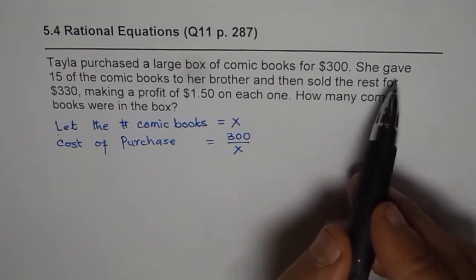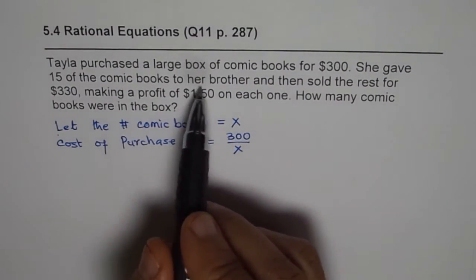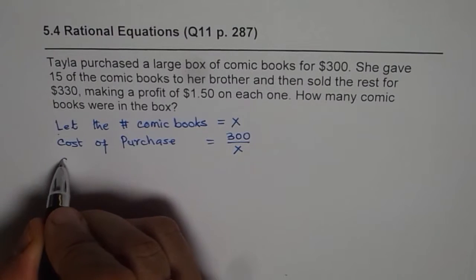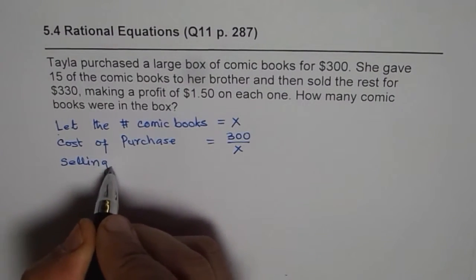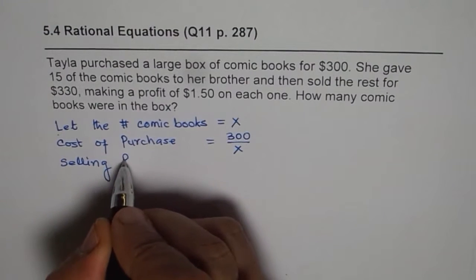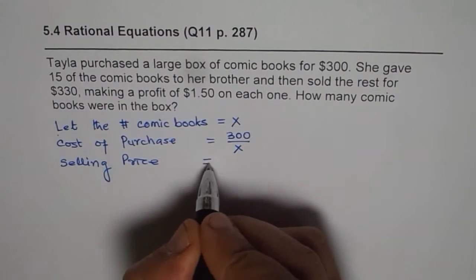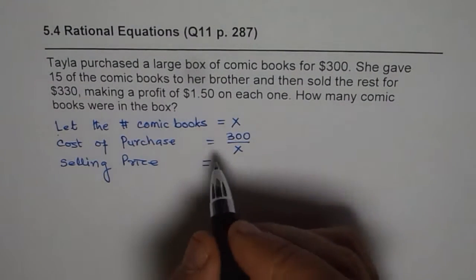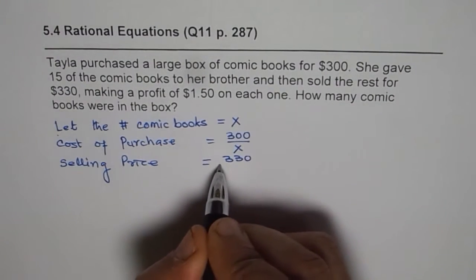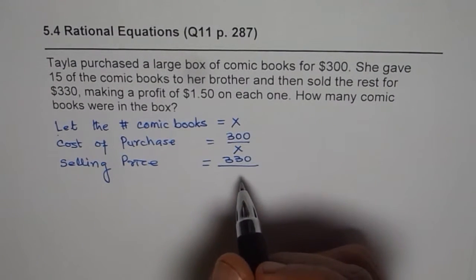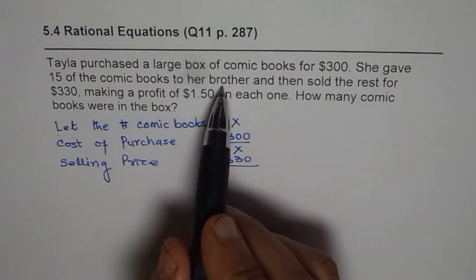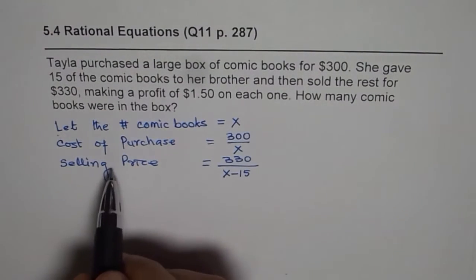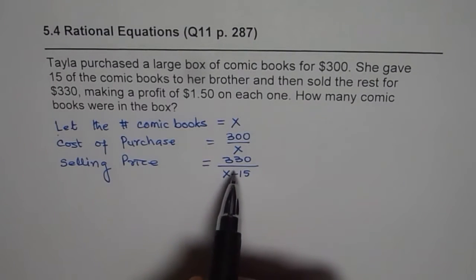So that is the cost of purchase. She gave 15 books to her brother and then sold the rest for $330. So selling price or selling rate. Now we prefer to use the word rate here because in rational functions we are just comparing the rates for uniformity and ease of solving problems. Now since 15 were given, x minus 15 are sold. So that is the selling price for each comic book.